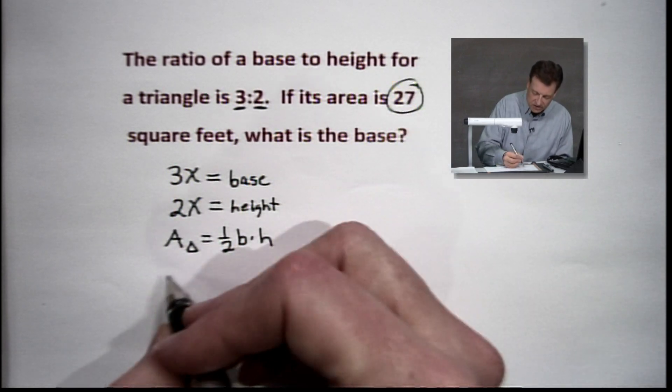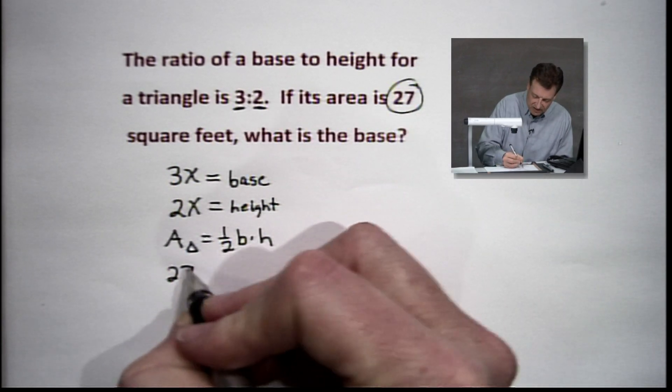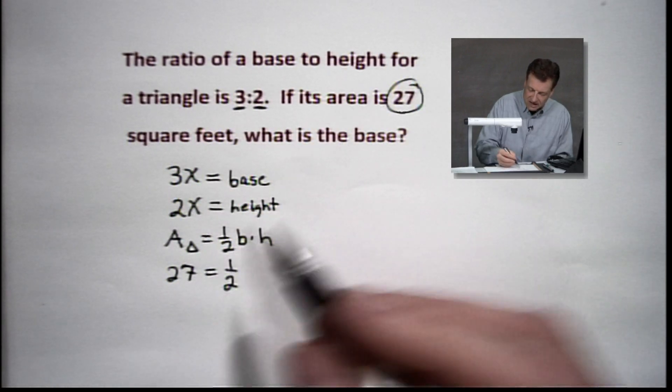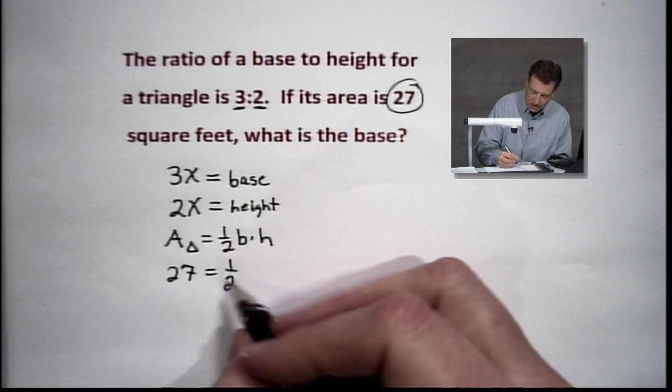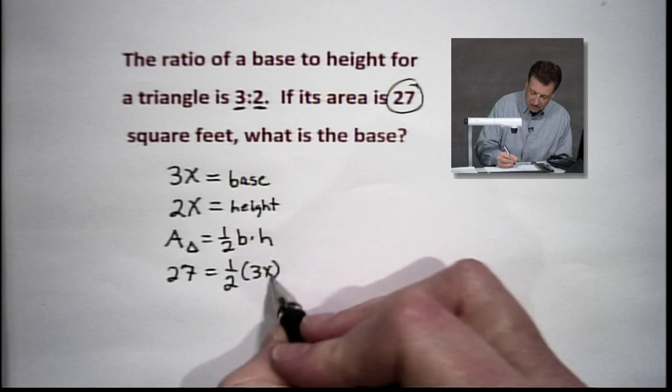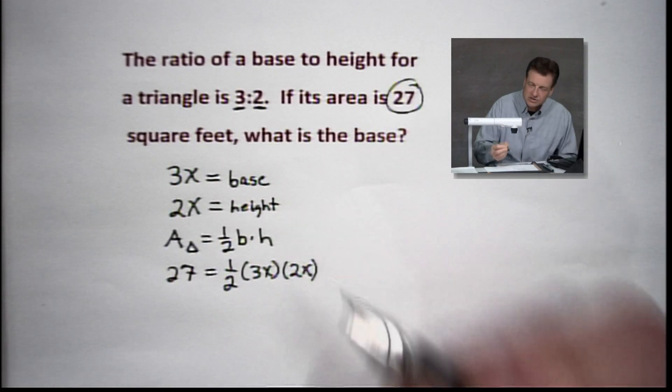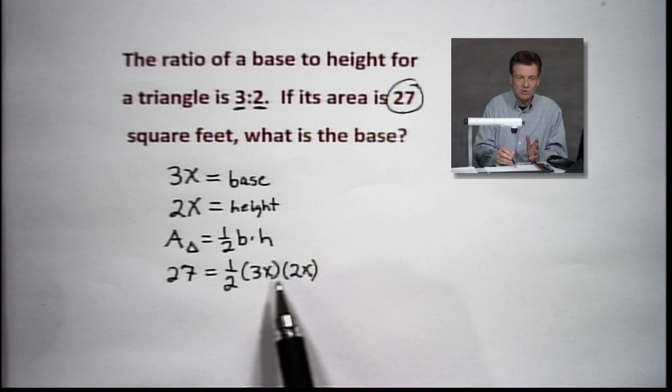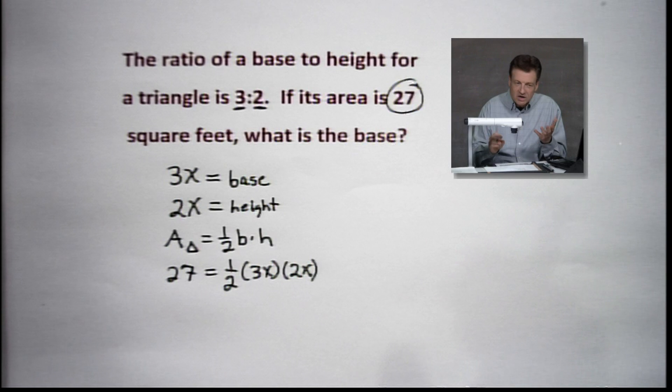I know the area. We're told it's 27. It's of course in square feet. We'll put our 27 there. Equaling to 1 half, my base is now 3x, and my height is 2x. That comes from that ratio. That comes from putting the x next to those. That's 3 times x, remember, and 2 times x. So we're still in the money here.